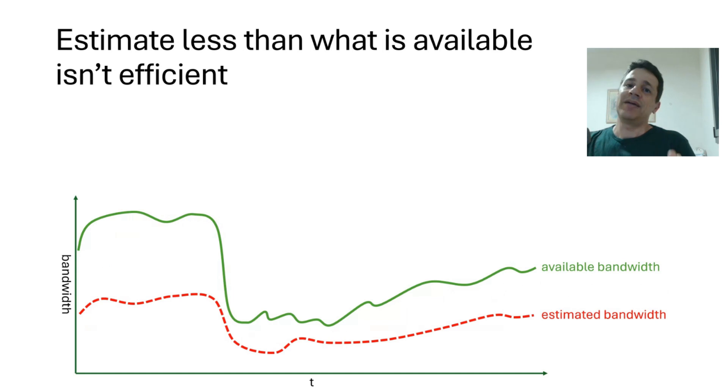Now, what happens if we estimate less than what is available? What happens is that we become inefficient in what it is that we're doing. In the chart here, what you see is an estimated bandwidth that is less than what the available bandwidth is. The yellow areas indicate exactly where you could have used more bandwidth to send or receive our data, especially video.